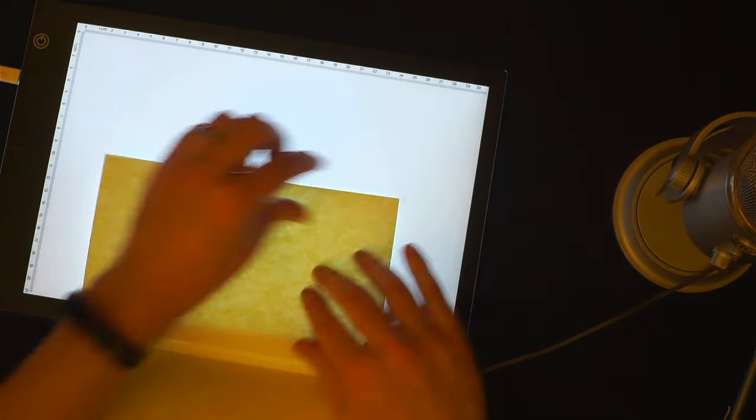It's called an electroluminescent panel or EL panel. I've got this one because I wanted to trace some drawings into my sketchbook, but the LED lightbox is too thick to fit between the pages.